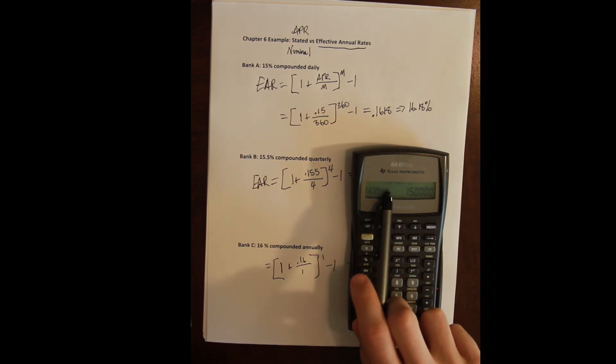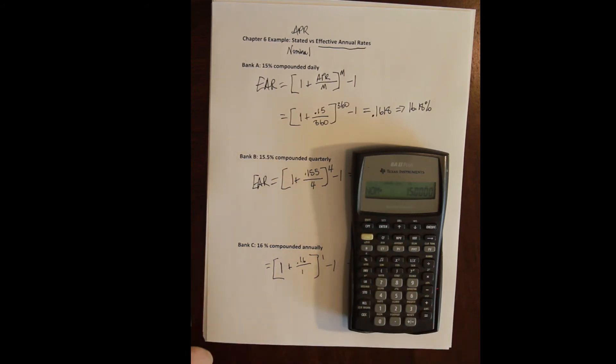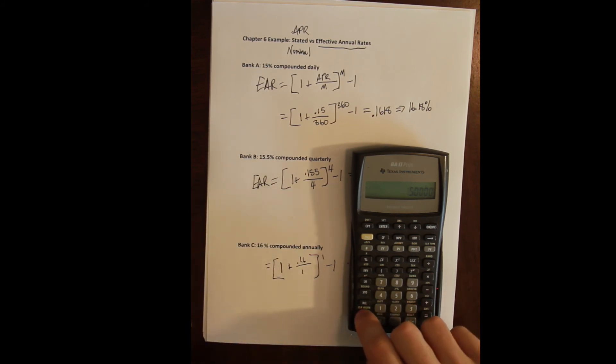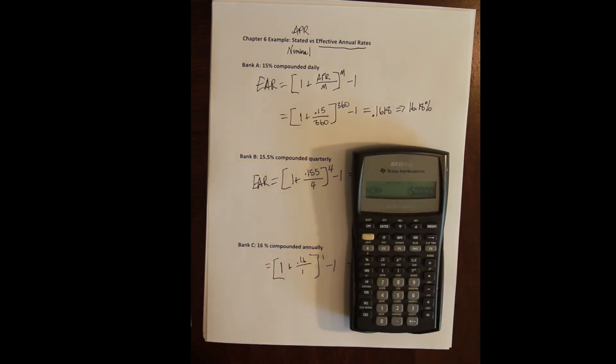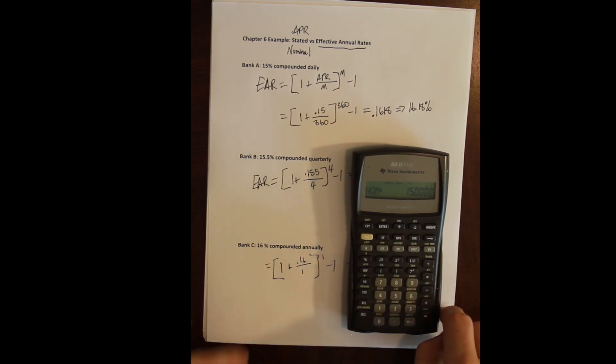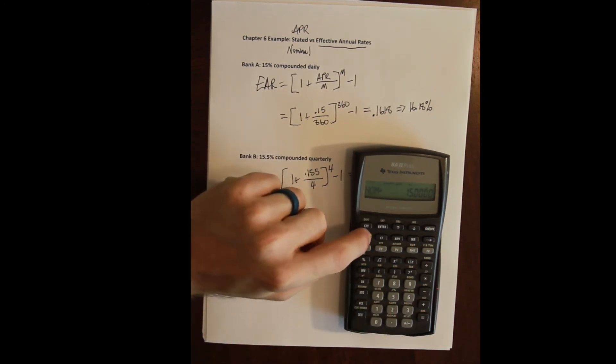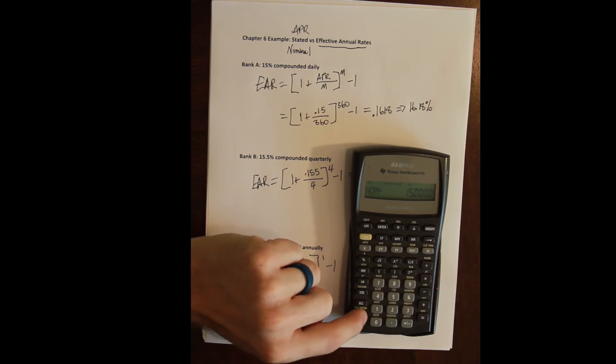Notice at the top of the screen there are some words: it says compute, it says enter, and it gives you an up and down arrow. This is telling you the controls you can use or need to use in this environment. Notice values are stored. Clearing, turning it off, clearing doesn't affect the value, just like the time value of money buttons. These values are stored separately. The way to clear the interest conversion environment is to press second and then clear.